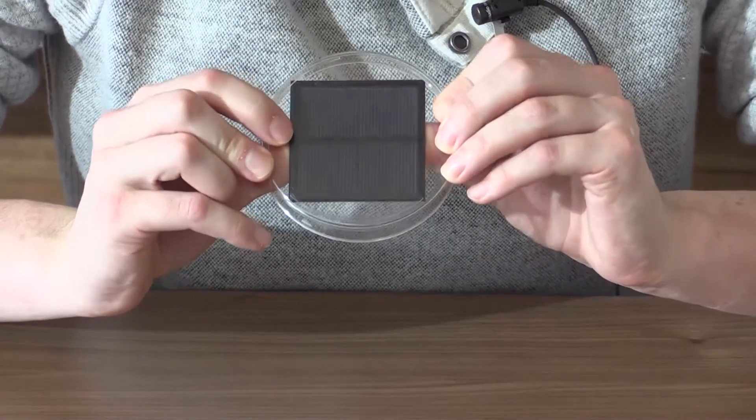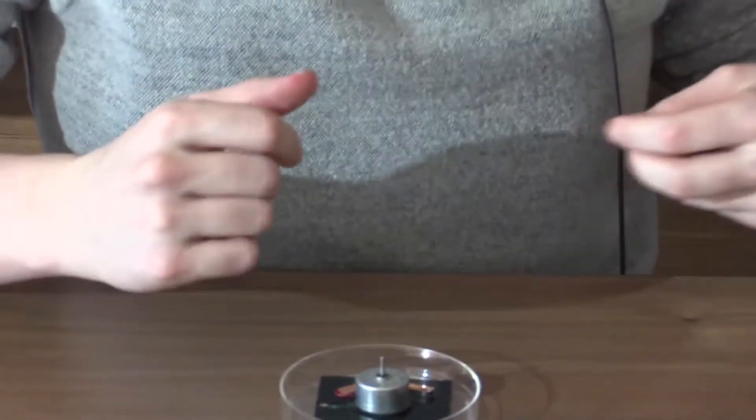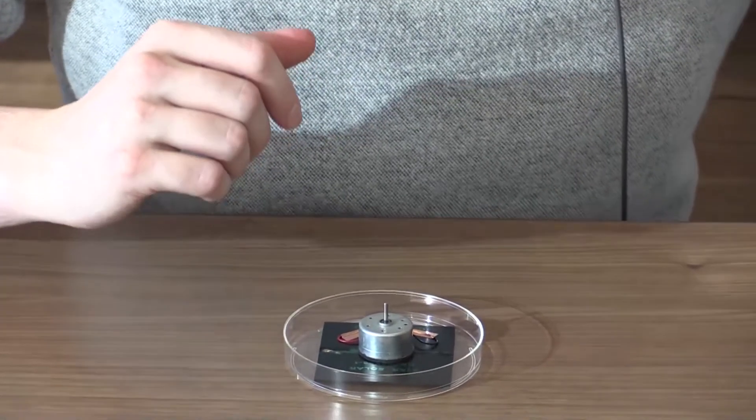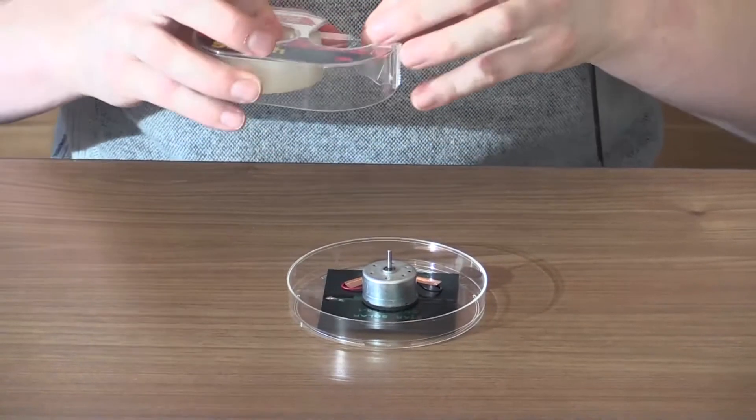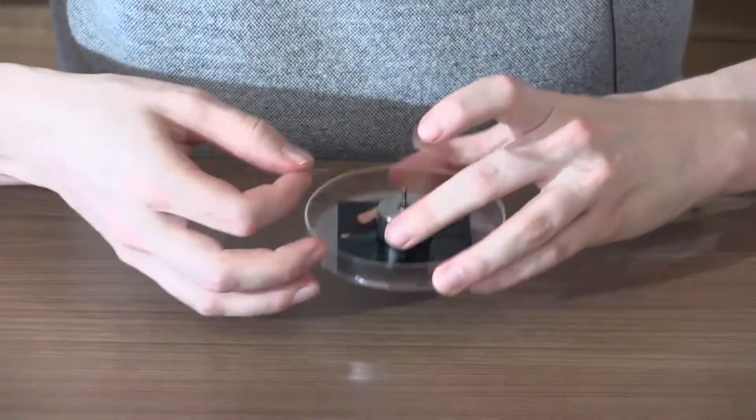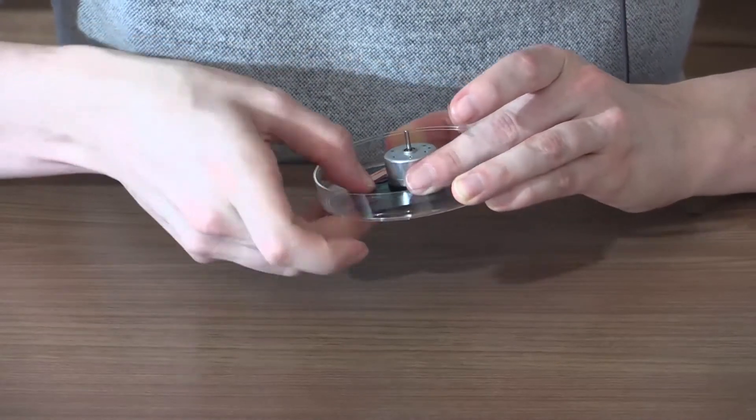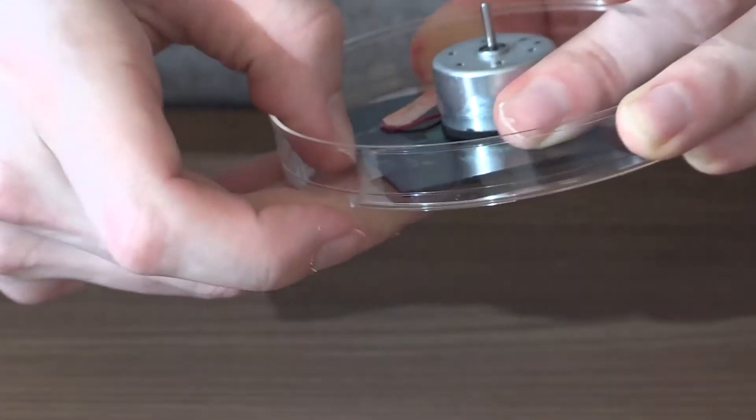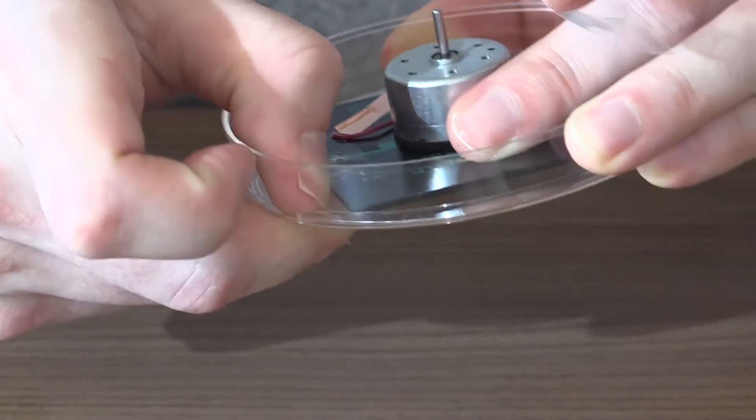We're going to lay it so that the motor is sticking up out of it. We're going to take some scotch tape and we'll use this to tape the panel to the bottom of the petri dish.